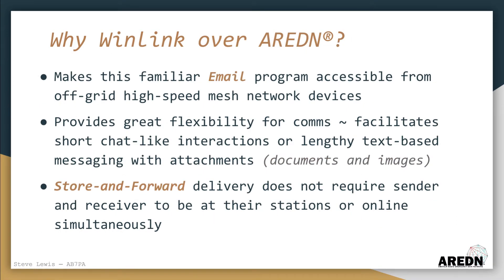What we want to do here is to make this familiar email system available as a service on an off-grid, high-speed data network, which might not have access to other radio delivery options or to the internet. Since WinLink is so versatile, we can use it for a range of message types — short chat or text messages, as well as detailed messages with complex attachments like documents or images. The store-and-forward architecture of an email system is ideal for situations when operators might not be available at the same time or may not even have their stations connected all the time. The system will store messages and then forward them to the correct destinations when stations become available.